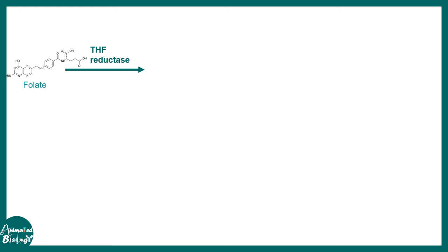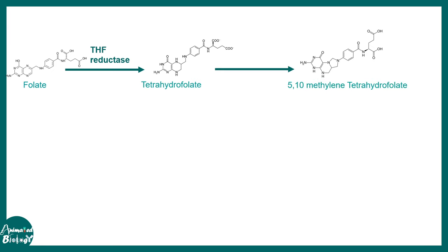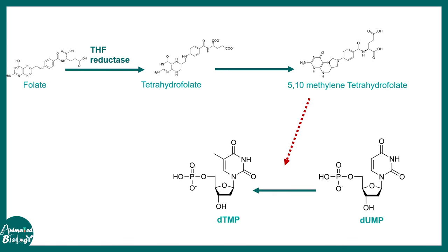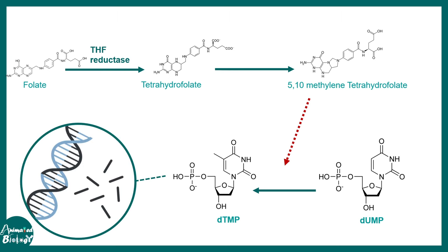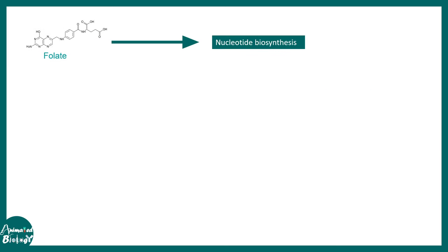The question is how does folate deficiency lead to anencephaly — the complete absence of the brain. Folate gets converted to several intermediates that give rise to nucleotides. Specifically, folate is reduced by tetrahydrofolate reductase to form tetrahydrofolate, and eventually 5,10-methylene tetrahydrofolate is formed. This product helps in the conversion from dUMP to dTMP. These are the building blocks of DNA, so folate is absolutely essential for nucleotide biosynthesis and thereby DNA synthesis.